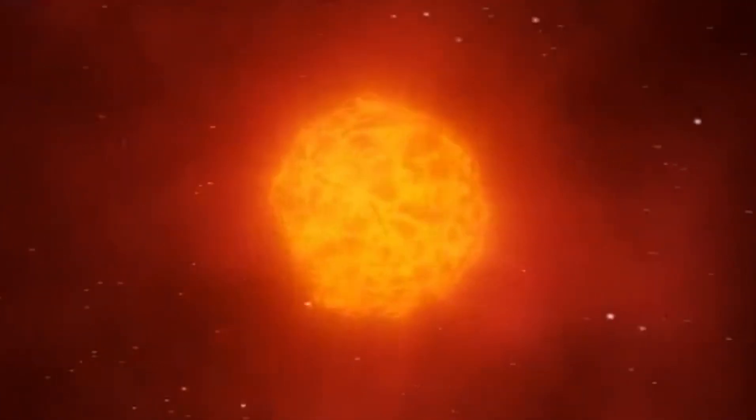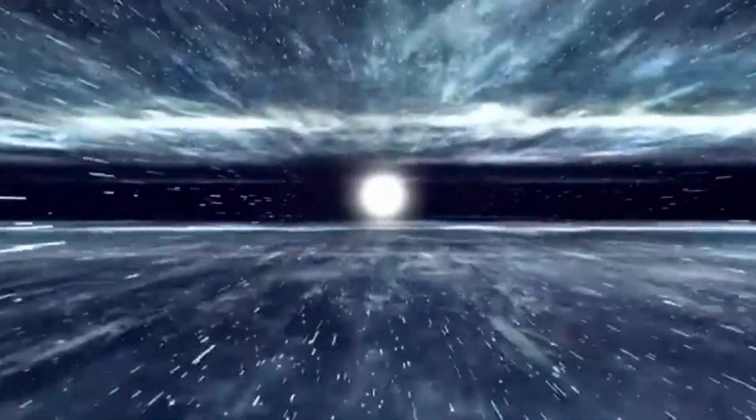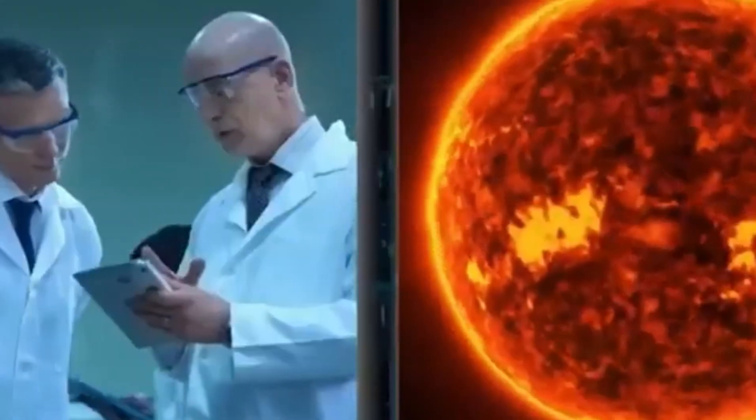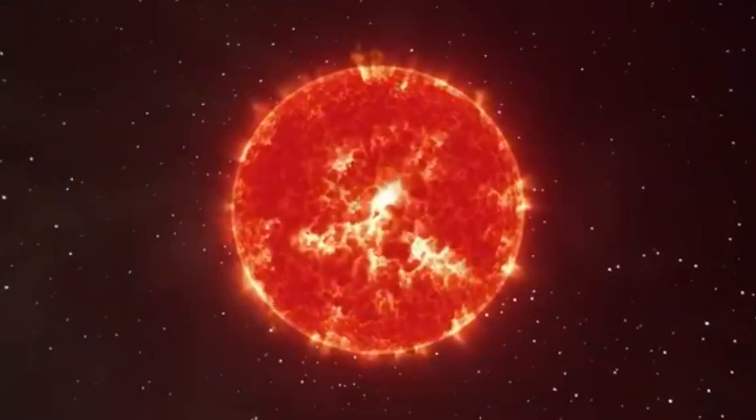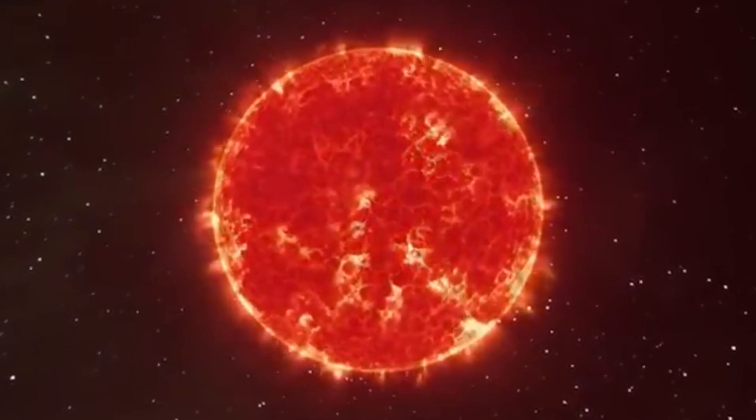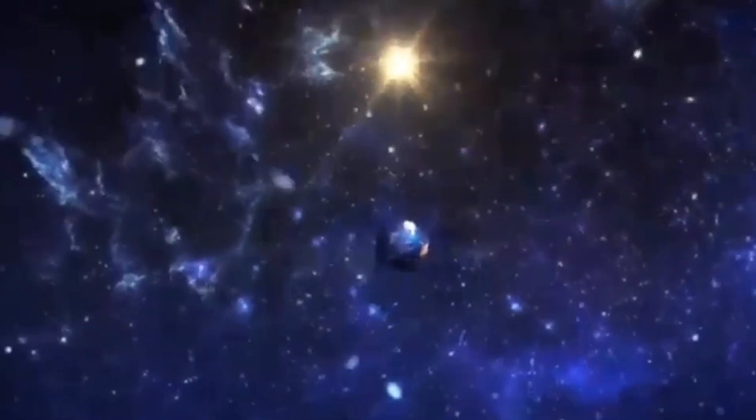Betelgeuse, approximately 764 times larger than our Sun, is a stellar behemoth. Its colossal size is almost beyond human comprehension. Imagine a star so vast that, were it to replace our Sun, its surface would extend beyond the orbit of Mars, engulfing Mercury, Venus, Earth, and Mars in its stellar embrace.